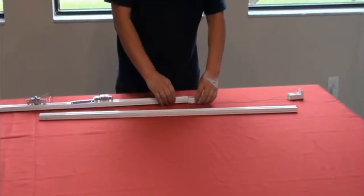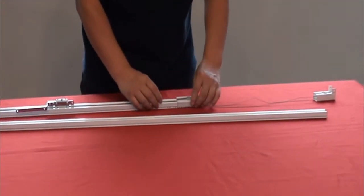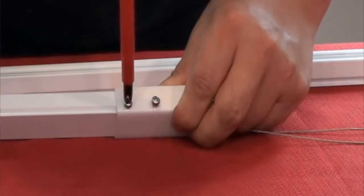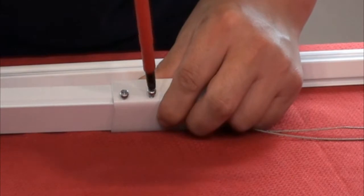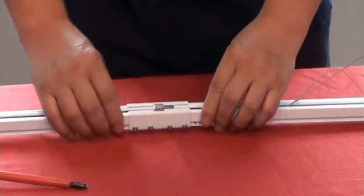Connect the two tracks with the track connector. Start by placing the wire inside the connector without pulling or twisting the wire. Then, push the connector halfway into the main track and secure it by fastening the screws with a Phillips screwdriver. Now attach the single track to the connector and secure it.